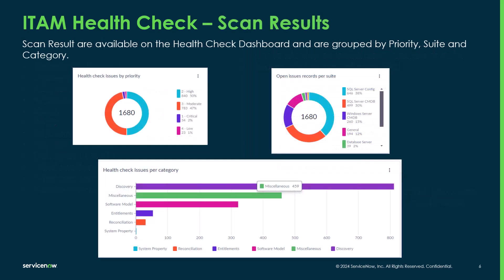Scan results can be found right on the dashboard. It groups the results by priority — high and critical are things you'll want to look at right away. It also gives you the number of scan results per suite and breaks them down by category, so you can have different people looking at different components if needed.